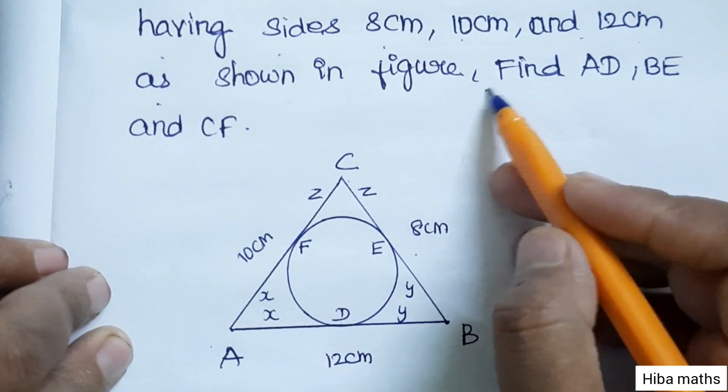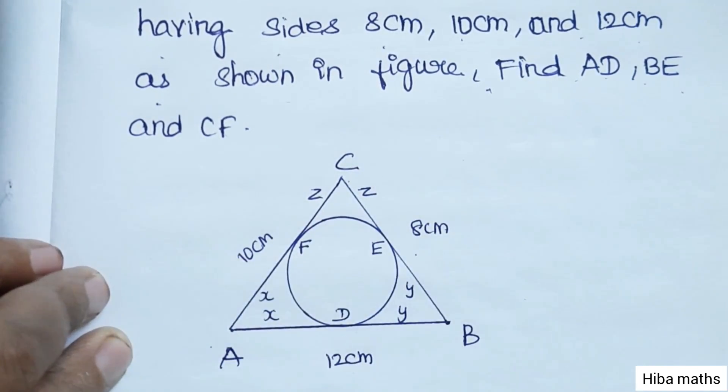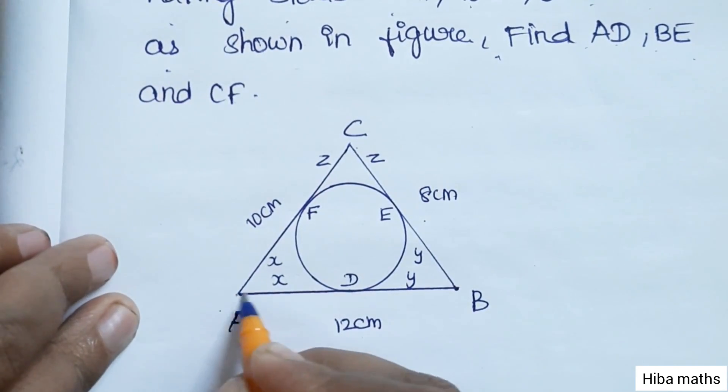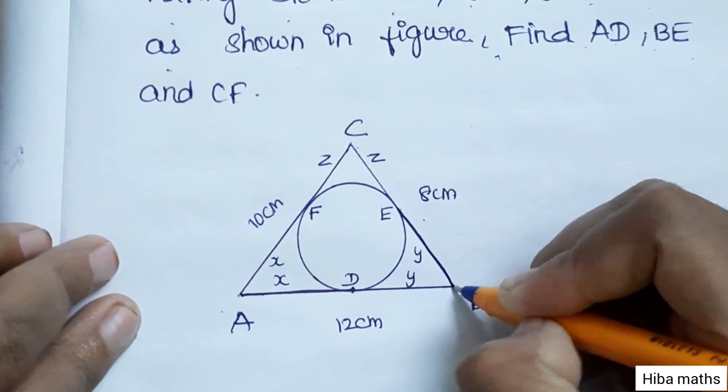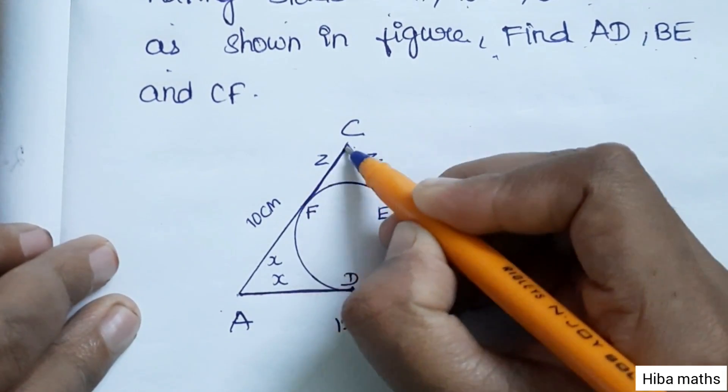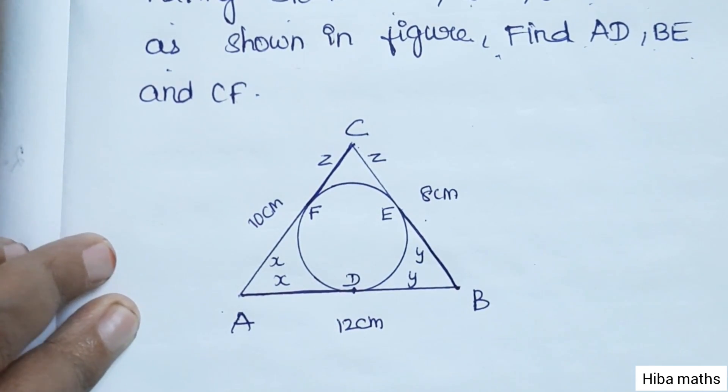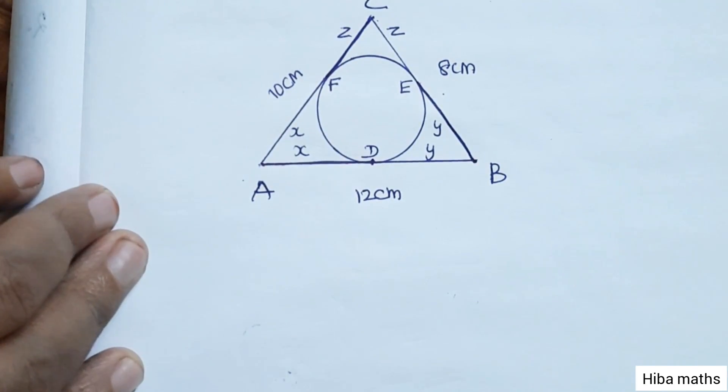As shown in the figure, find AD, BE, and CF. AD is on one part, BE is on another side, and CF is on the third side. You can see these three parts in the diagram.